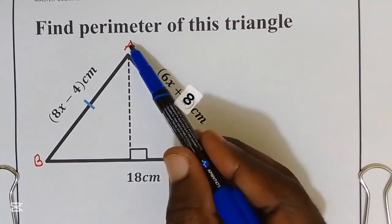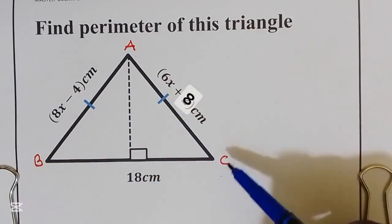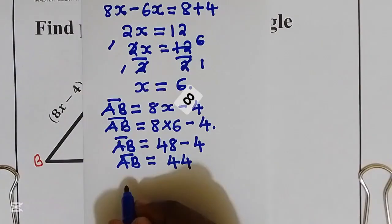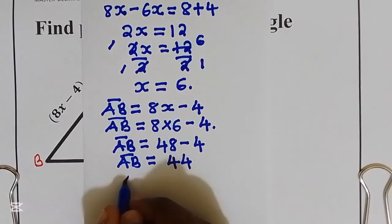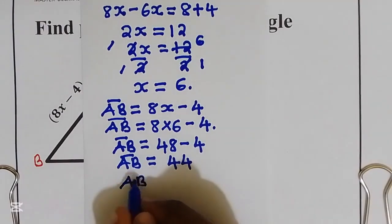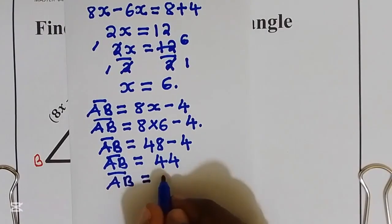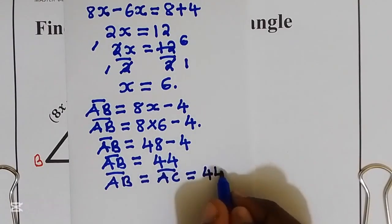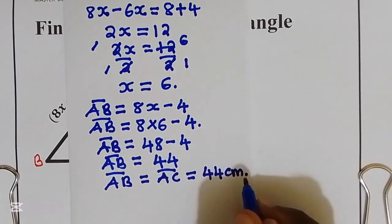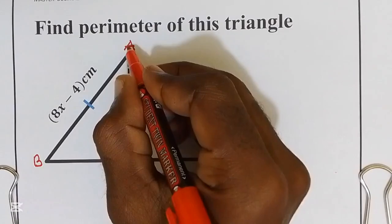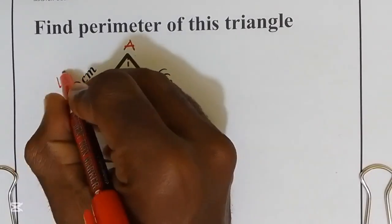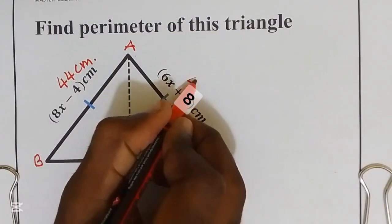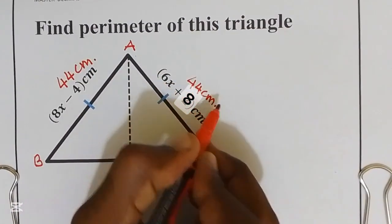But we know distance AB is equal to distance AC. Isosceles triangle. So distance AB is equal to distance AC. This is equal to 44 centimeters. AB equal to 44 centimeters. AC also is 44 centimeters.